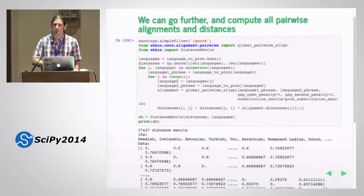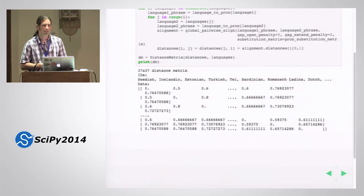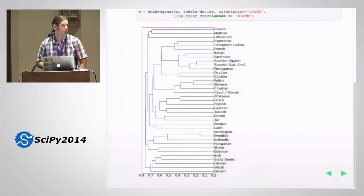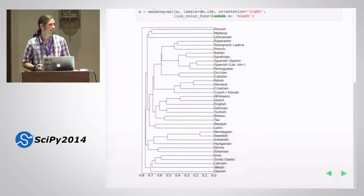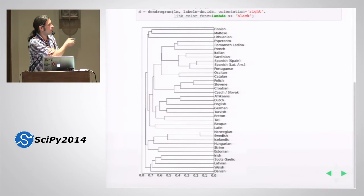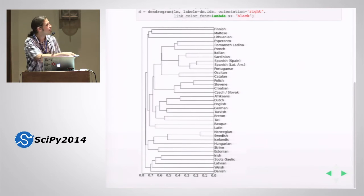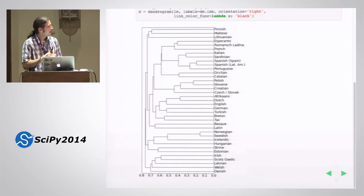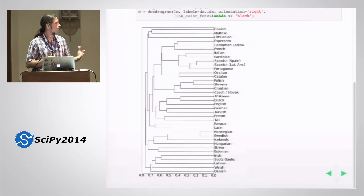I can take this one step further and compute all pairwise distances, get the scikit-bio distance matrix back, and then with a little bit of SciPy magic build a phylogenetic tree representing the relationships between these languages. Based on these phonetic representations, we see some difference between Spanish in Spain and Spanish in Latin America — though they are very close and their nearest neighbor is Portuguese. Norwegian and Swedish are very close, Icelandic is right near them. I was pretty amazed this actually worked based on just one phrase, and it shows just how general this functionality is.